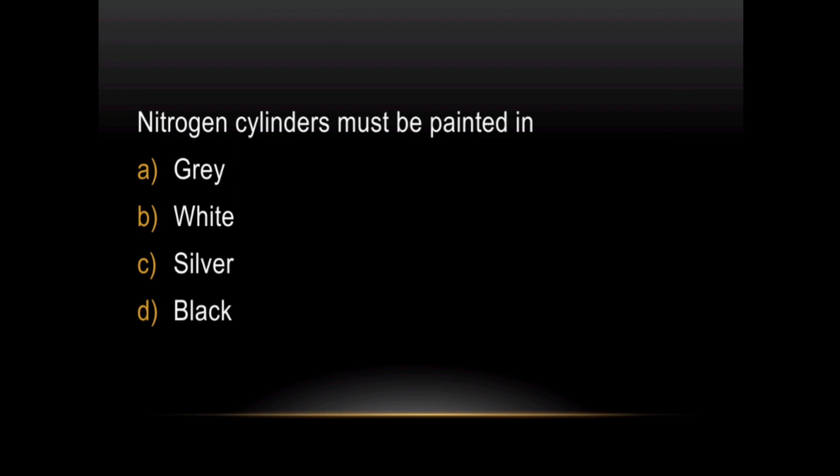Question 5: Nitrogen cylinders must be painted in — there is a body color for the cylinder. The nitrogen cylinder is gray. More cylinders are painted in different colors. What color are oxygen, carbon dioxide, and helium cylinders? Let us know in the comments.